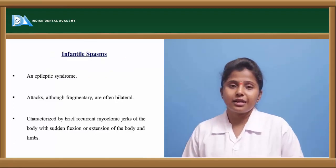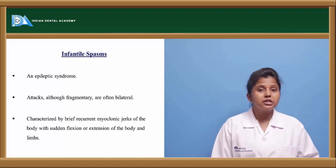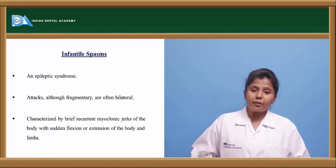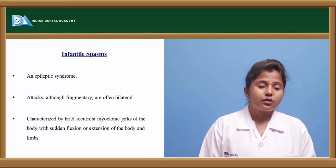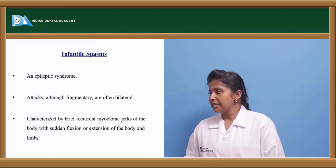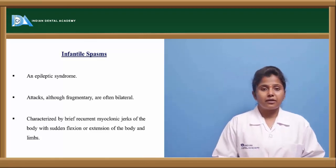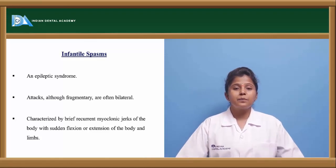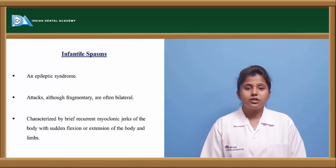Infantile spasms (infantile seizures) are seizures caused in infants — epilepsy from birth. It is an epileptic syndrome showing bilateral effects, with rapid muscular movements characterized by myoclonic jerks. All of a sudden, the hands, limbs, and feet are extended and the child has myoclonic jerks — with body extension, jerks are observed.